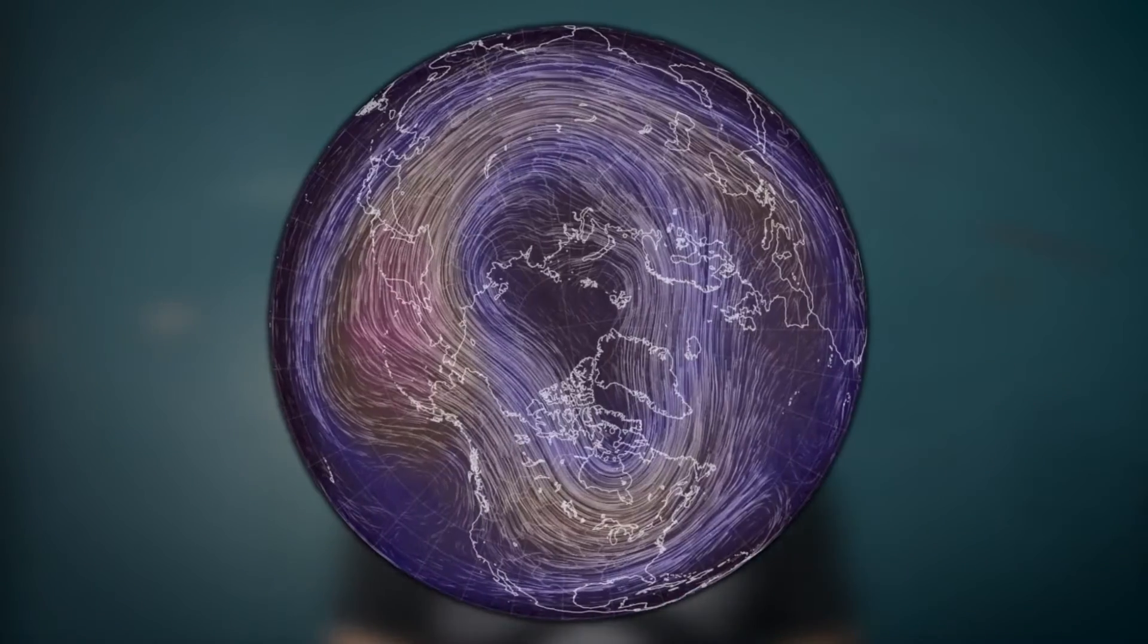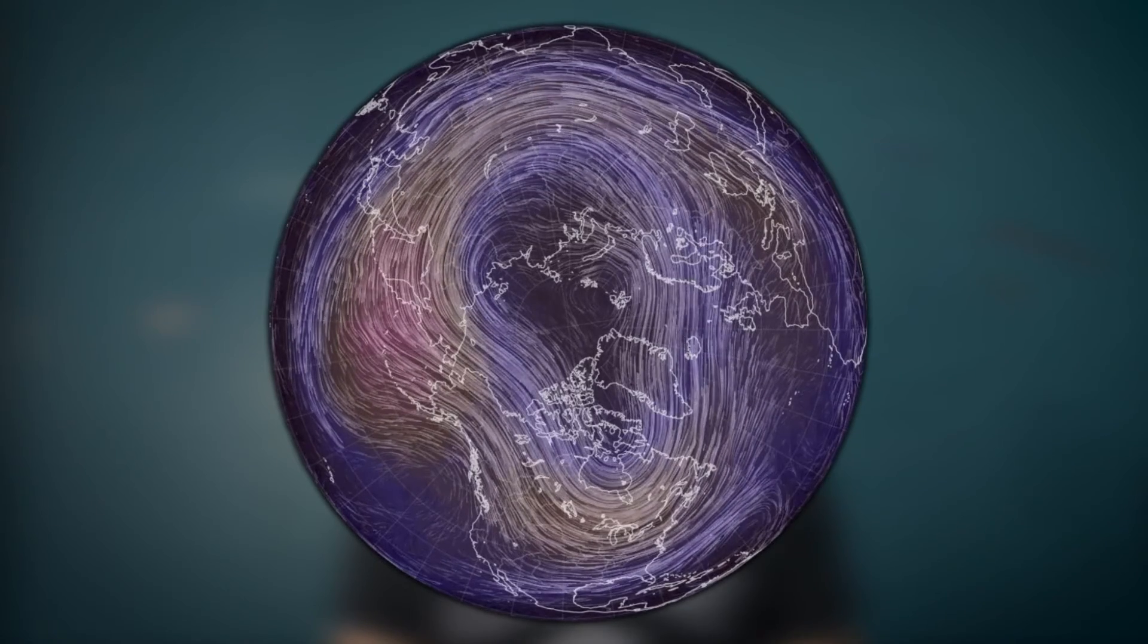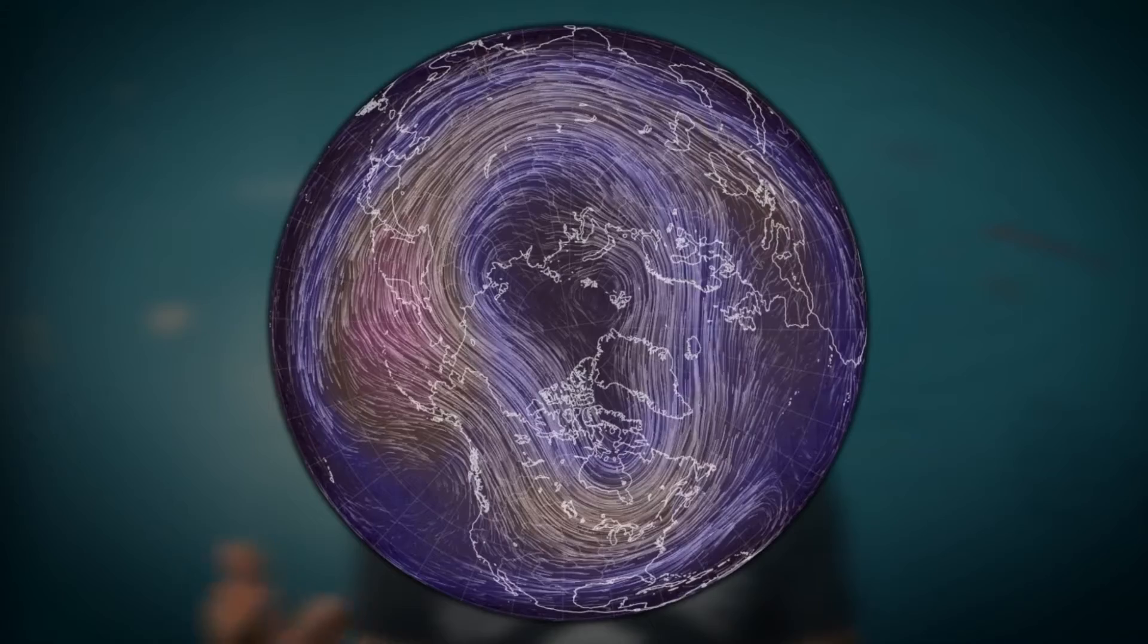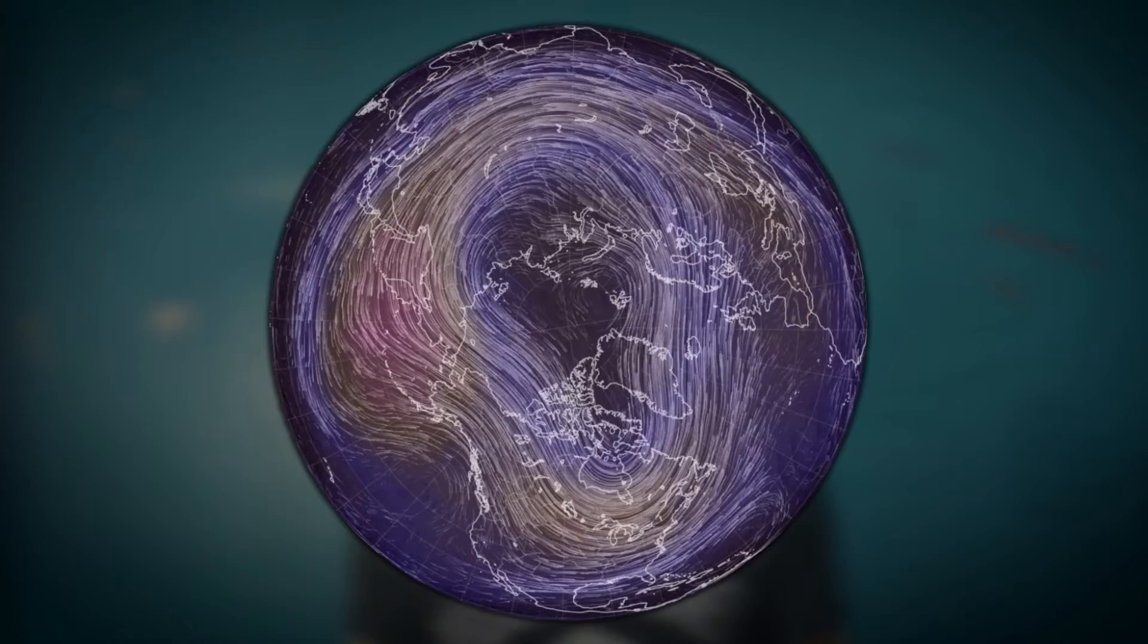This is the earth looking straight at the North Pole. The colors represent the different temperatures of the air masses around 30,000 feet in the atmosphere. Pretty unsurprisingly, you might notice that the air above the North Pole is very cold and it's also at a very low pressure.